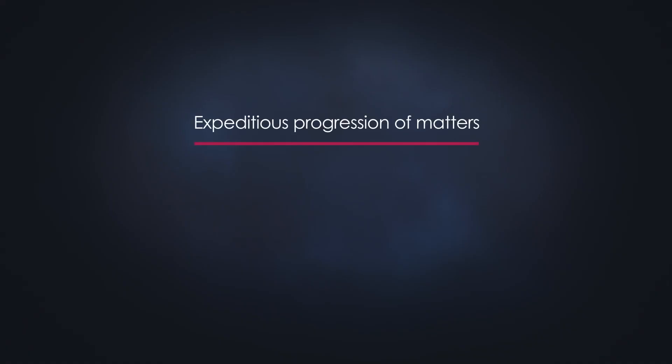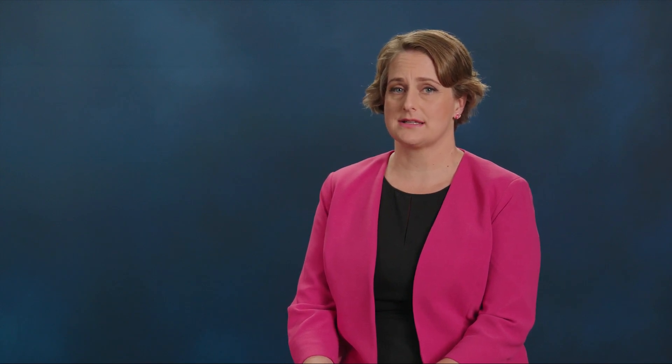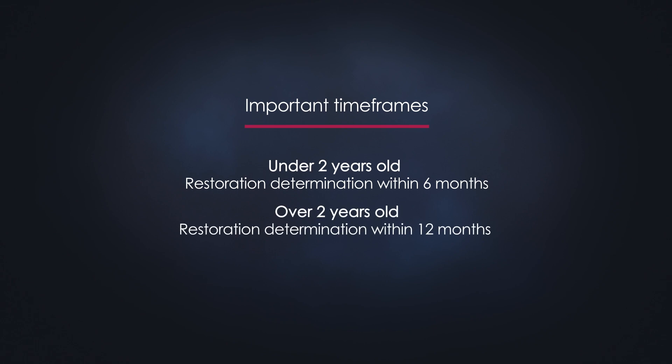Section 94 provides guidance about the progression of matters and the need for them to proceed expeditiously. They must proceed as quickly as possible: firstly, to minimise the impact on the child and their family, and secondly, to finalise decisions about long-term placement. Section 94 also says adjournments should only be granted when it's in the best interests of the child or there is a clear or substantial reason to do so. It's also important to know what Section 83 says about timeframes: for children under two years of age, the court is expected to determine if there is a real possibility of restoration within six months of making the interim order; for children over the age of two, this must happen within 12 months.